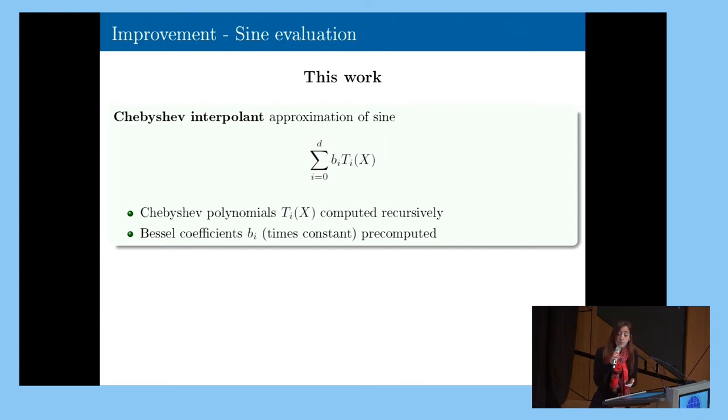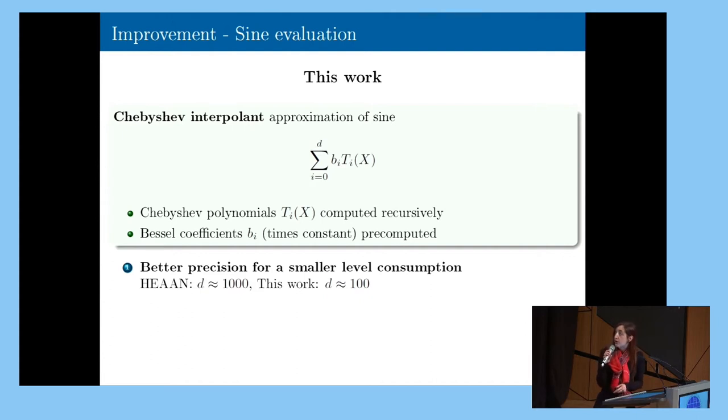So why using Chebyshev instead of the previous technique? Mainly because we can have a better precision by consuming less levels. So to give you practical numbers, if, in HEAN, they needed a polynomial of degree about 1,000, in our case, we need a polynomial of degree about 100.